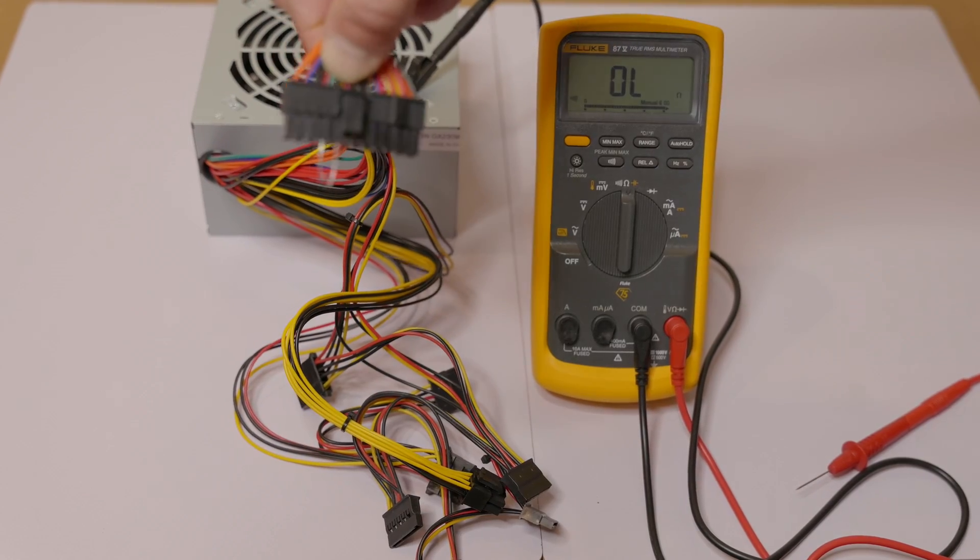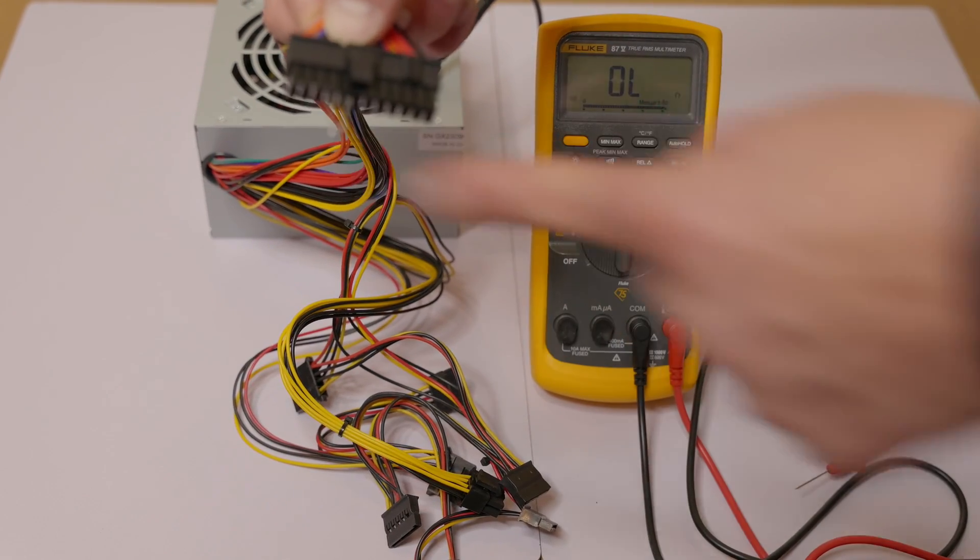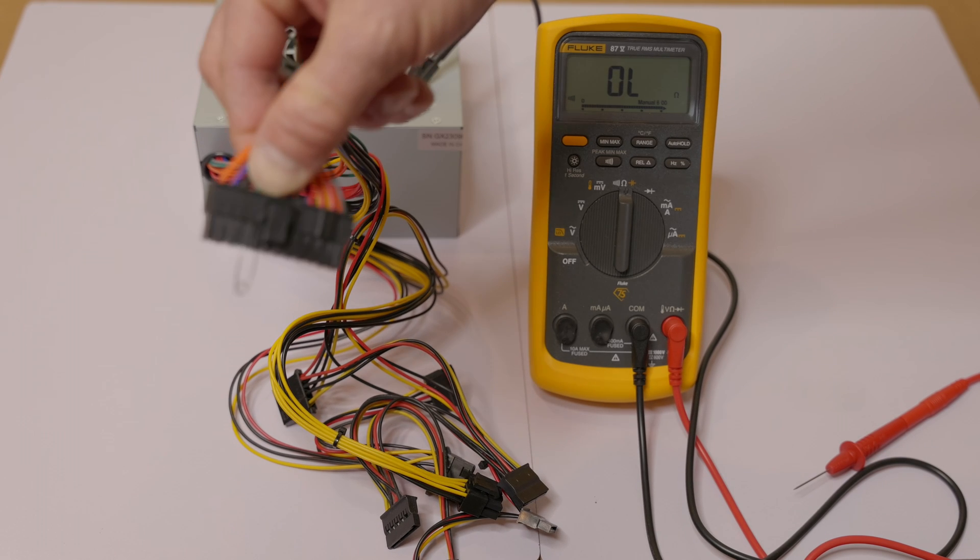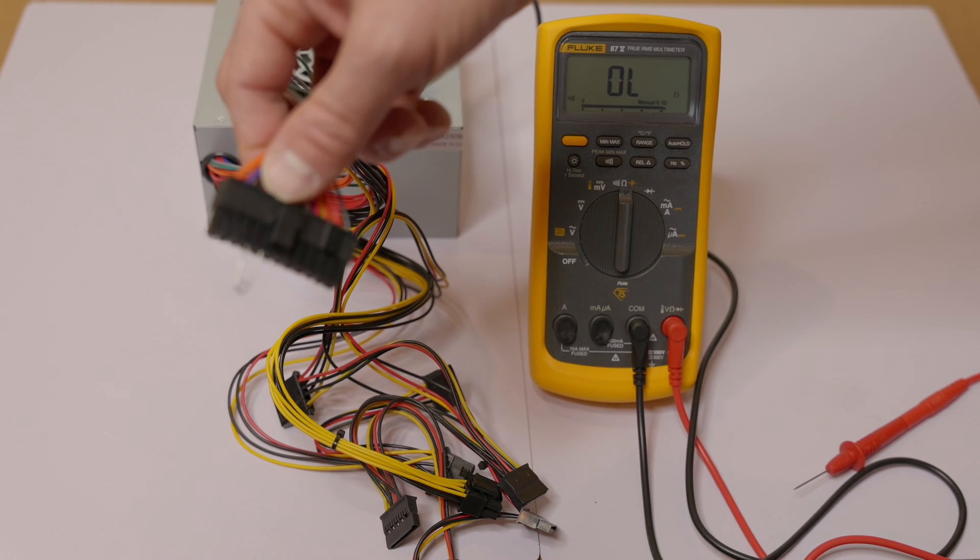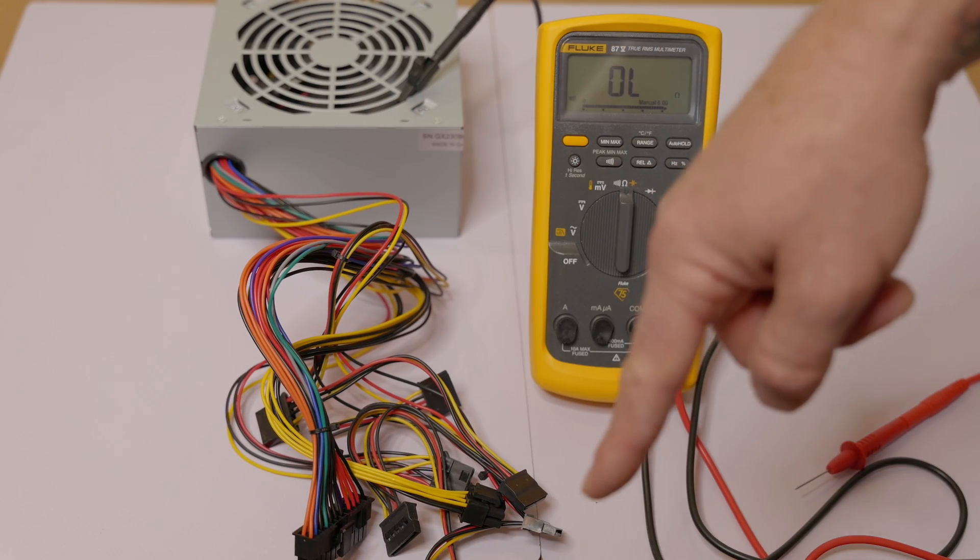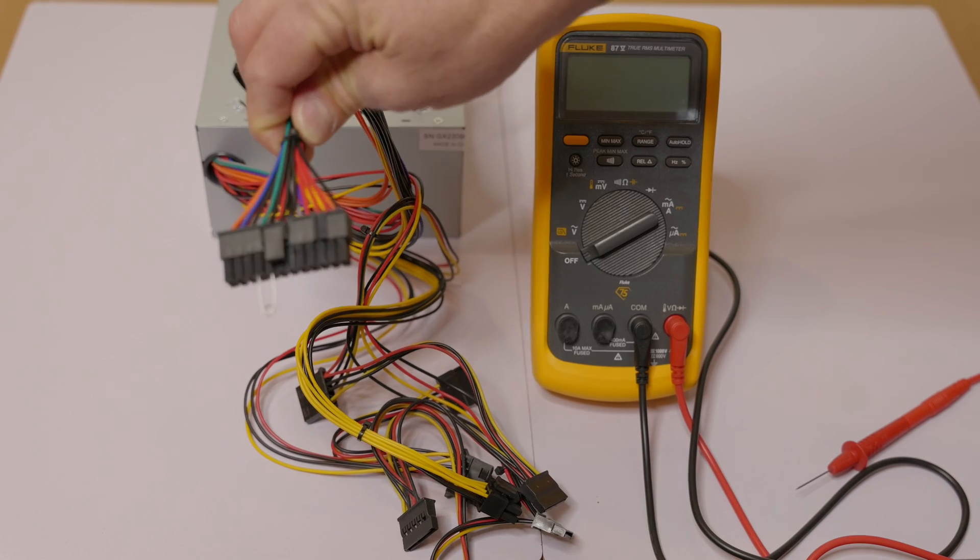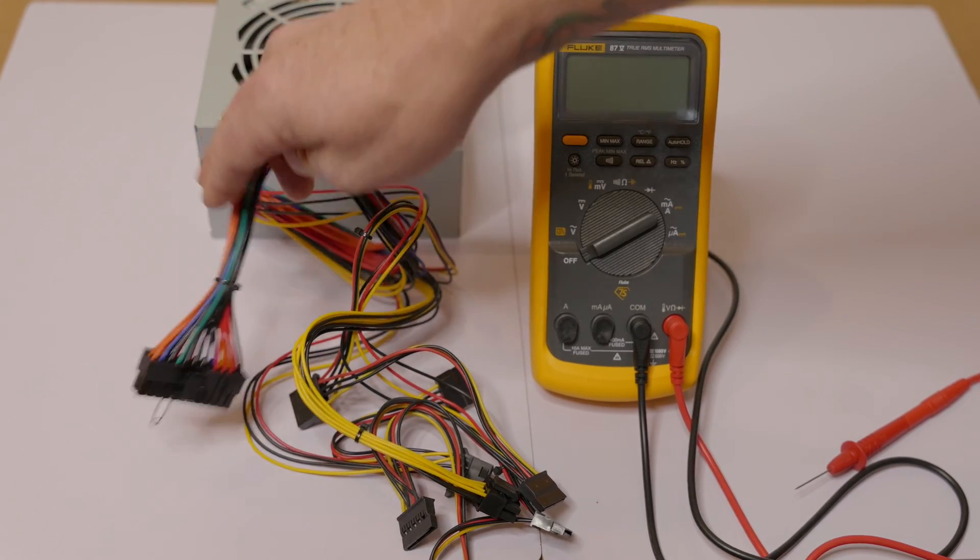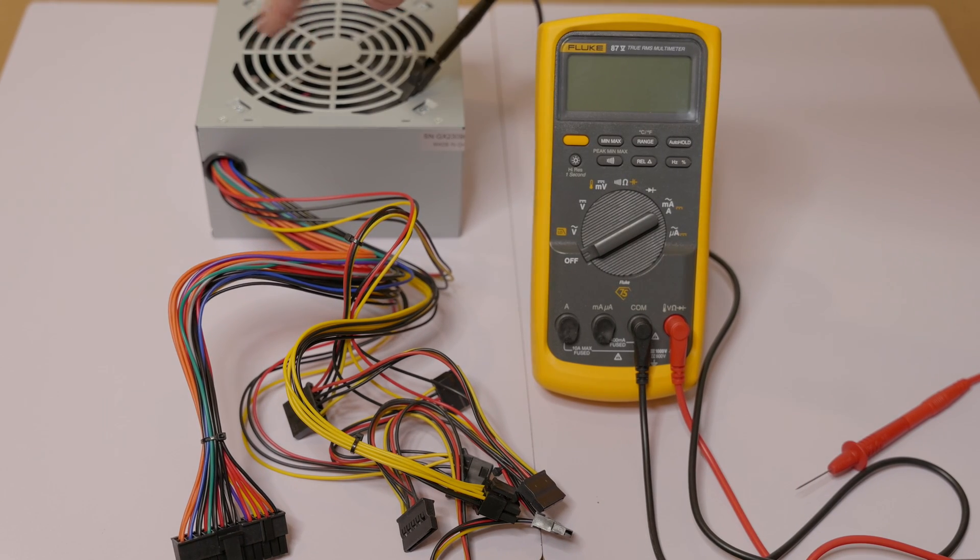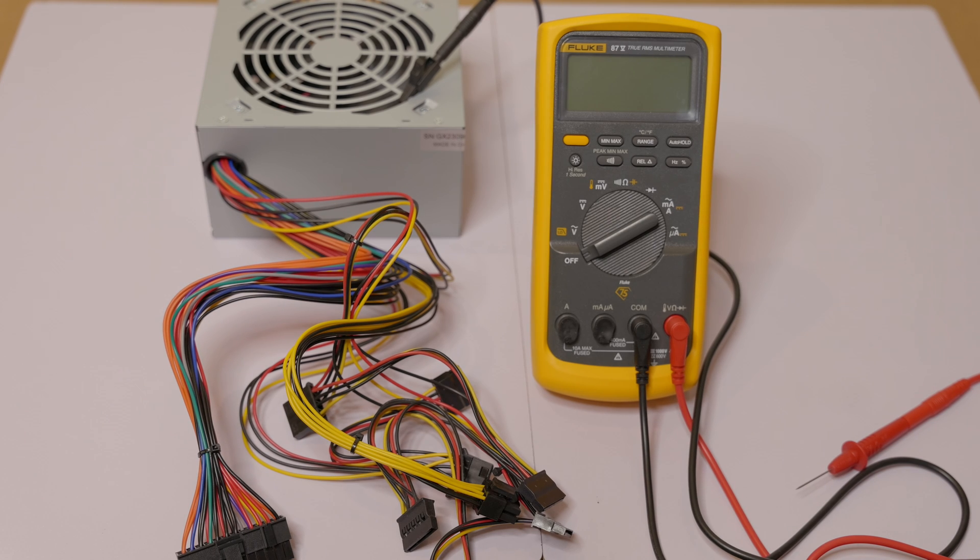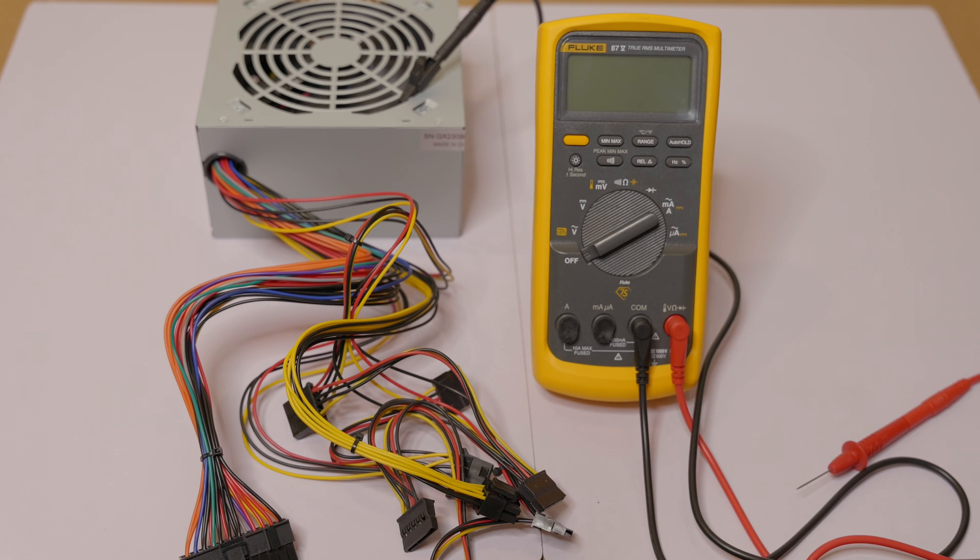So just remember when you're checking power, you have to have this jumper in. That's what actually tricks the power supply into thinking that it is plugged into the motherboard and allows the fan to run and for it to work and produce the power out to all the connectors. So now that you've checked all the power wires and the grounds and you've determined that everything is working properly, your fan is spinning once you've put your jumper in and powered it up, then you can safely say your power supply is operating correctly and you need to move on to further troubleshooting your computer.